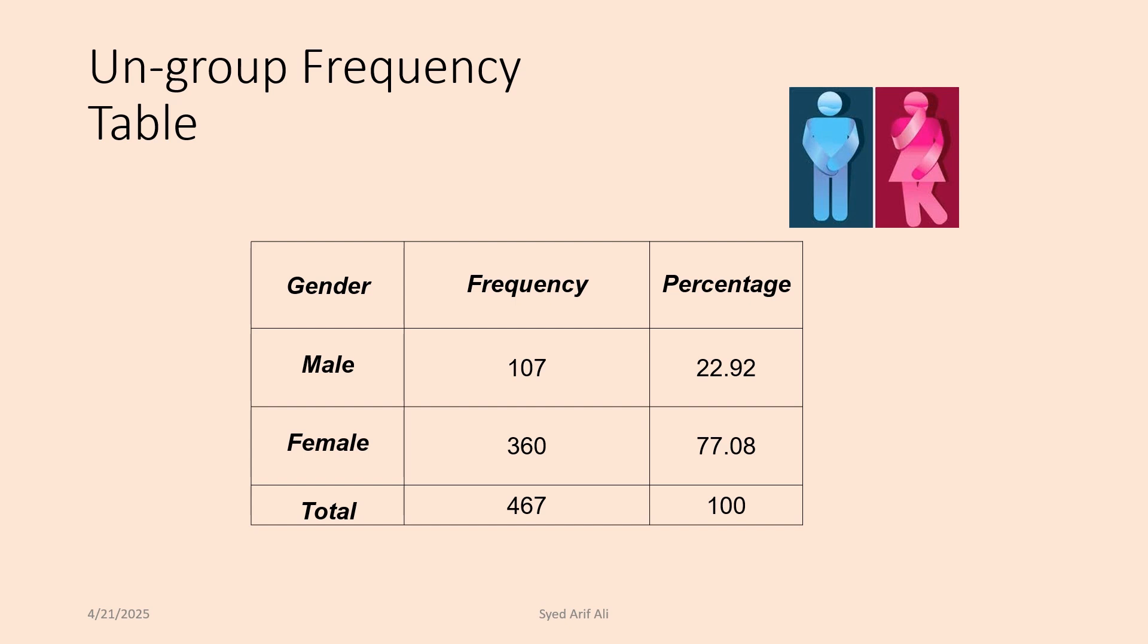In this ungrouped frequency table of the gender variable, the percentage of females is 77.08%.